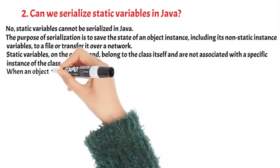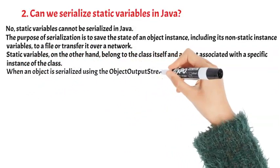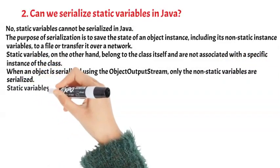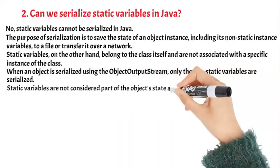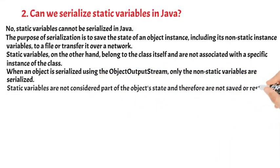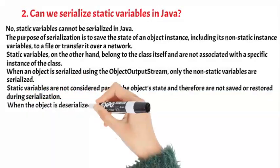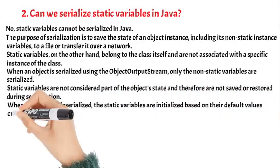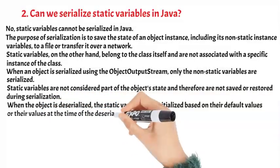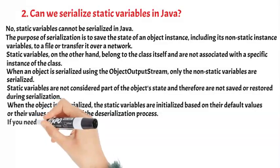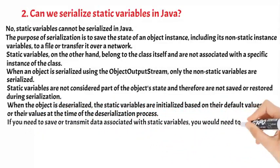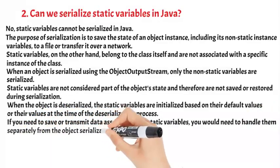When an object is serialized using the ObjectOutputStream, only the non-static variables are serialized. Static variables are not considered part of the object's state and therefore are not saved or restored during serialization. When the object is deserialized, the static variables are initialized based on their default values or their values at the time of the deserialization process. If you need to save or transmit data associated with static variables, you would need to handle them separately from the object serialization process.